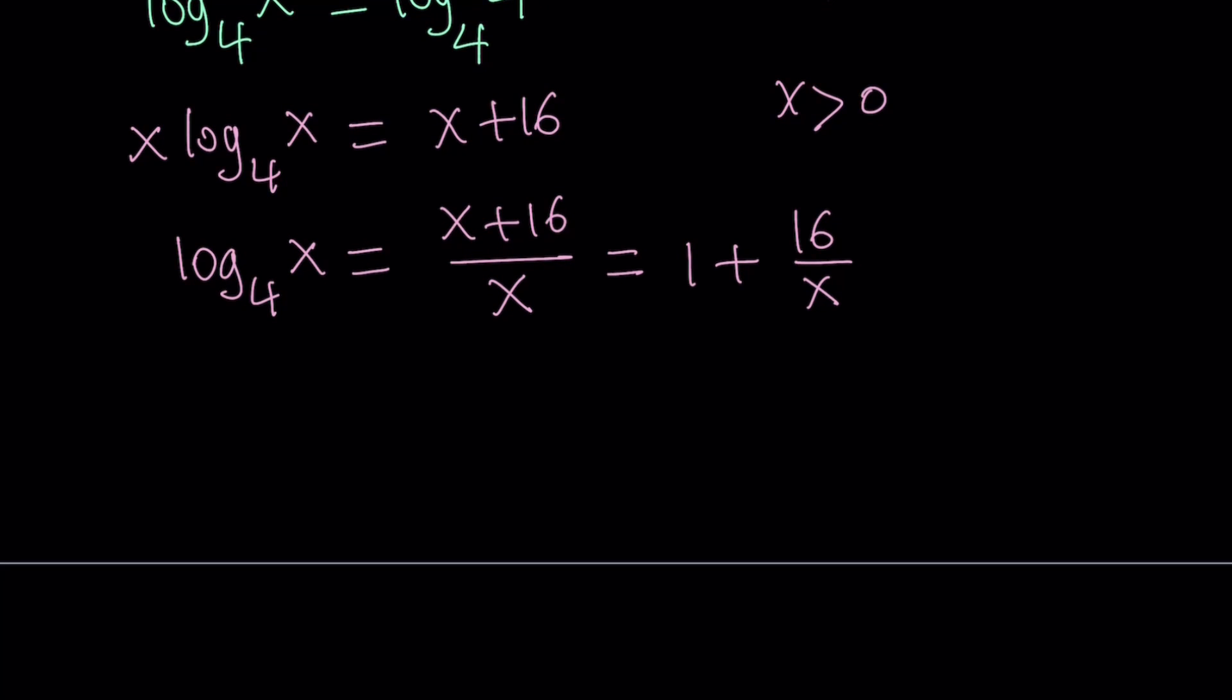Another good thing to observe is because 1 plus 16 over x, if you know that x is positive, therefore 16 over x is also going to be positive, which means we're adding something positive to 1, which means this expression is going to be greater than 1. And that's kind of nice because if you think about the left-hand side, this means log x is greater than 1, which means that x is greater than 4. So that's kind of nice. It's good to have a bound, whether it's an upper bound or a lower bound. In this case, we do have a lower bound for x. We know that x must be greater than 4.